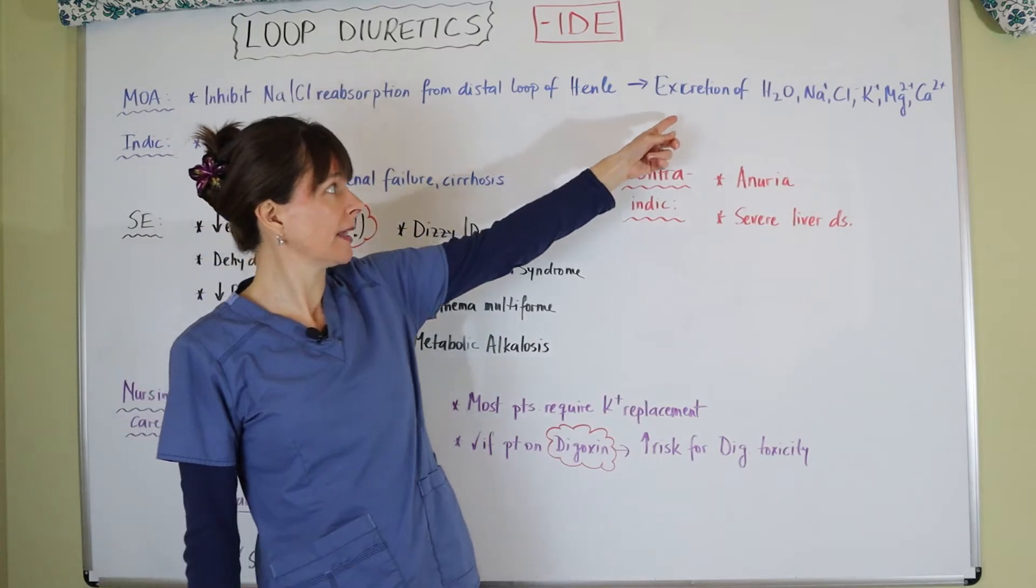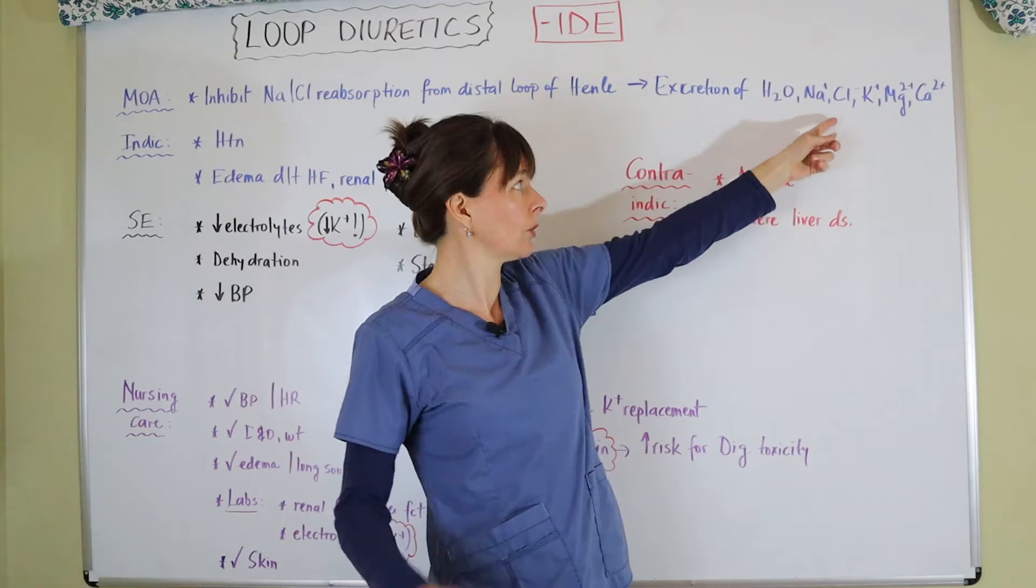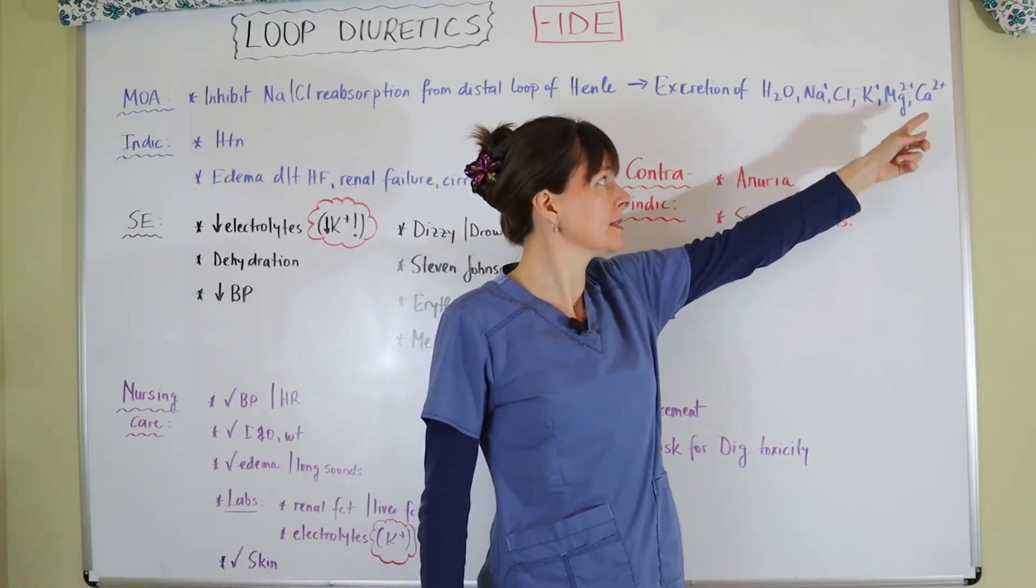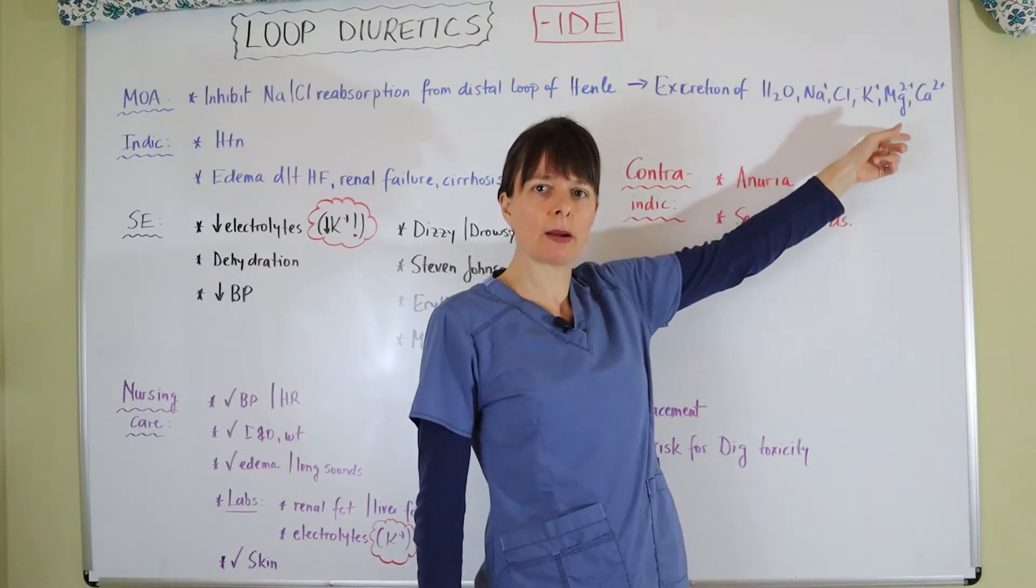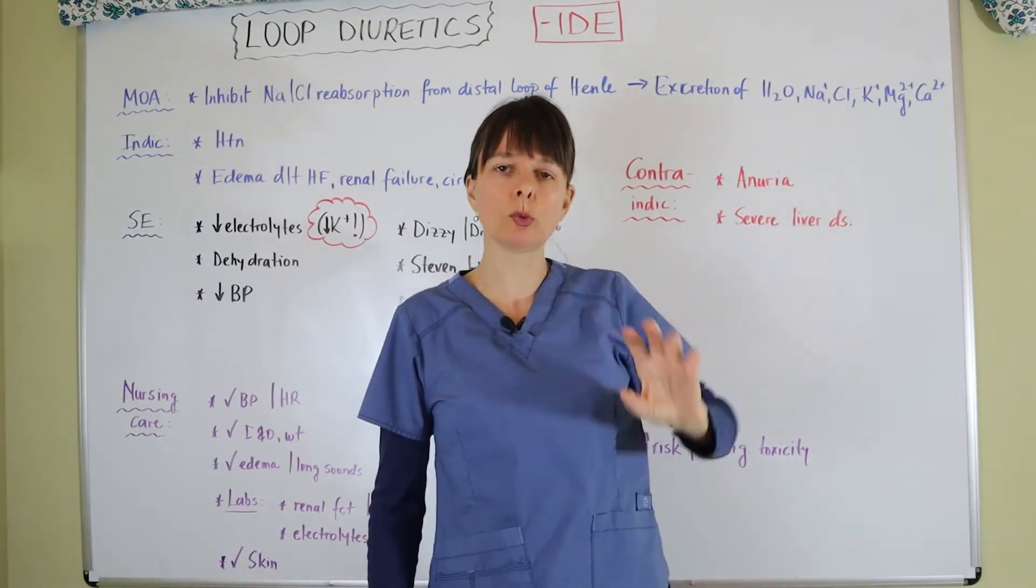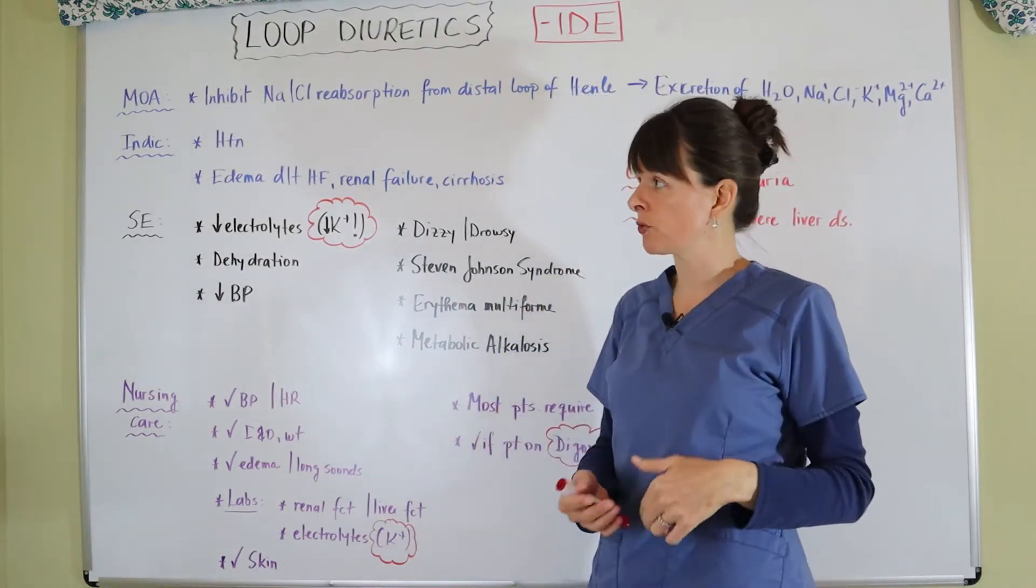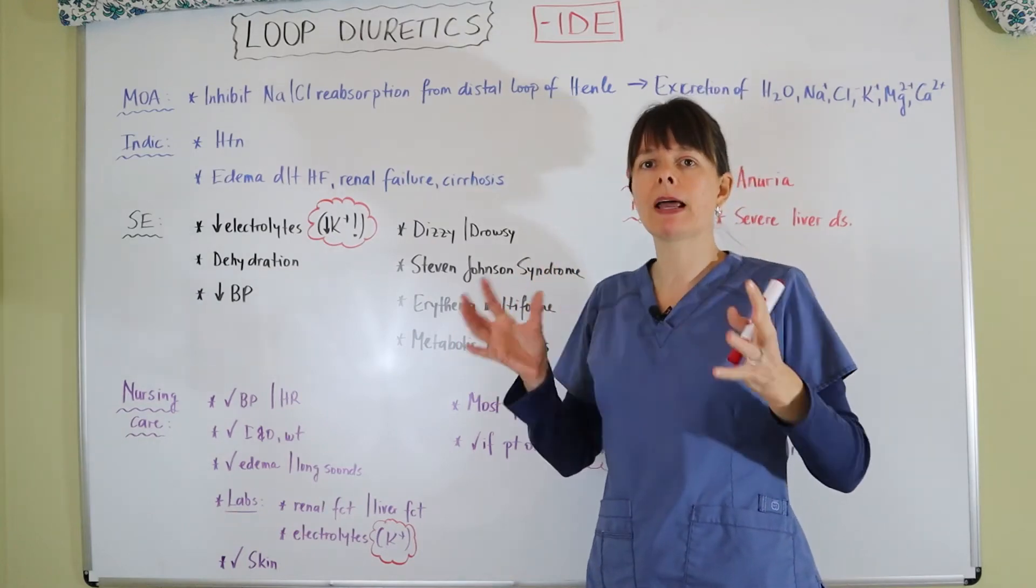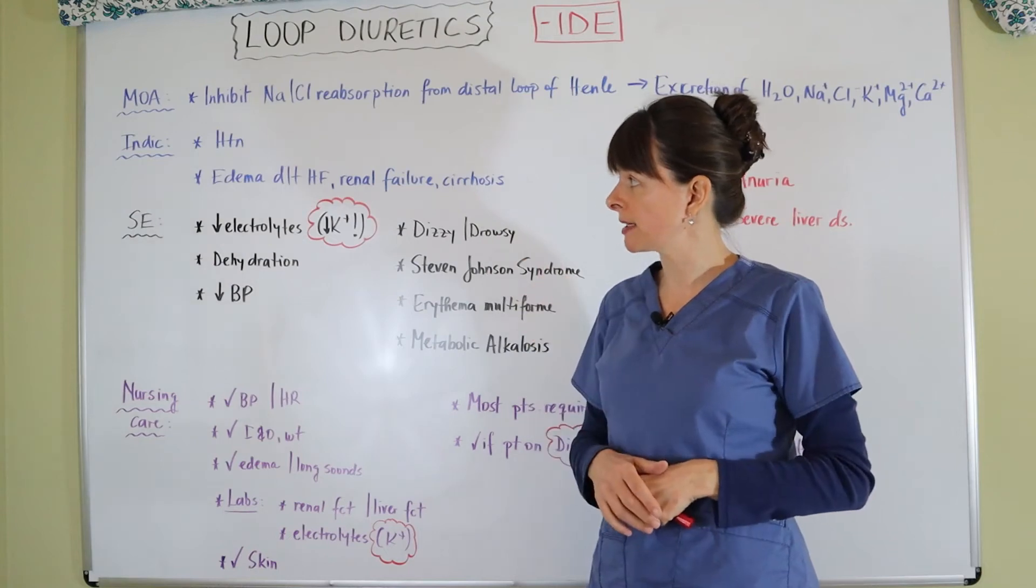But then they cause excretion of water as well as sodium and chloride as we learned over here, but also potassium, magnesium, and calcium. So this is very important to note here about the anatomy and what the loop of Henle usually does in terms of reabsorption and excretion regulation. And these loop diuretics can cause imbalances of all these different electrolytes, which is what we're going to discuss in a moment.